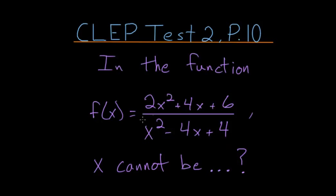In mathematics, you can't divide by 0. So we need to figure out which values of x make this bottom expression, or the expression in the denominator, equal to 0.